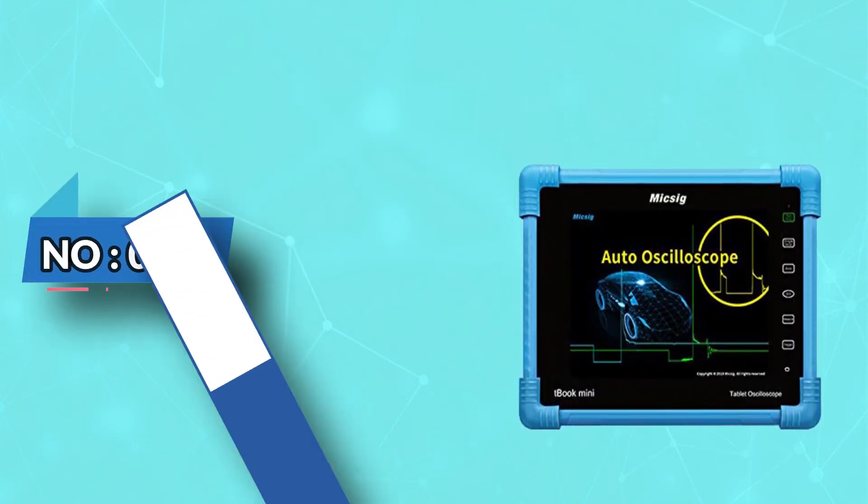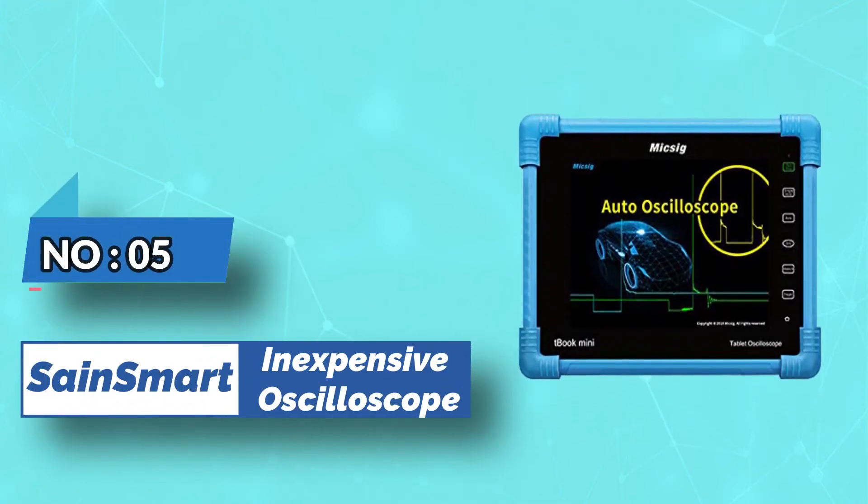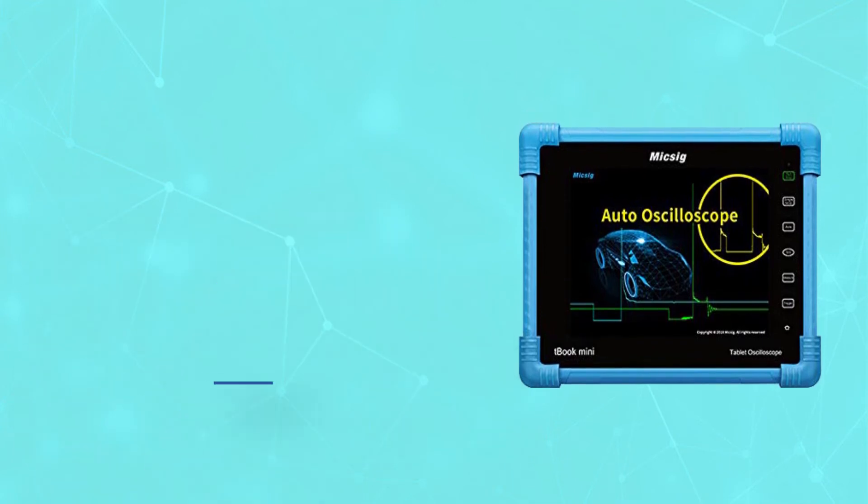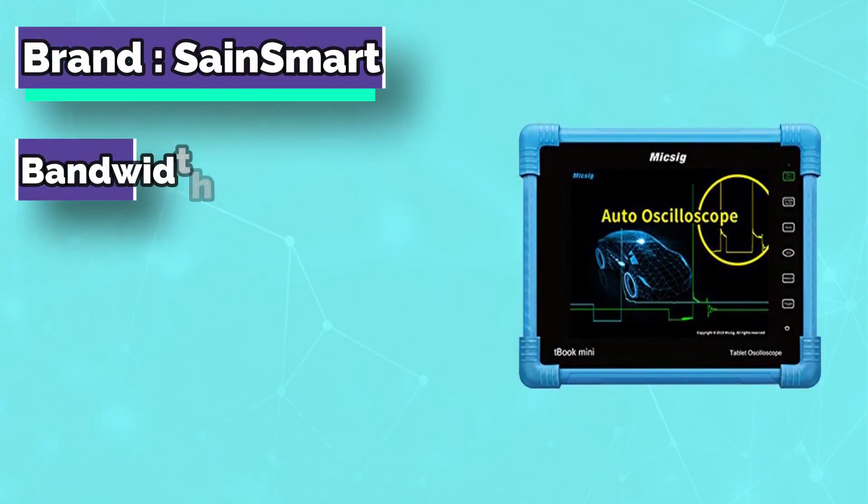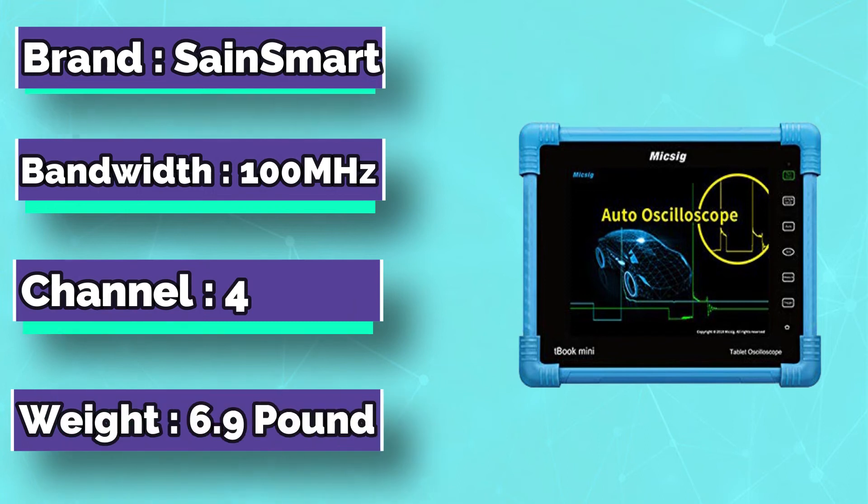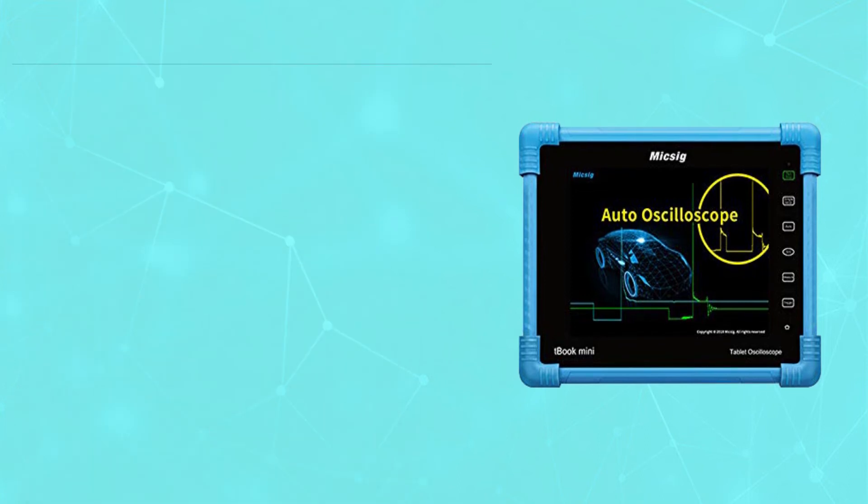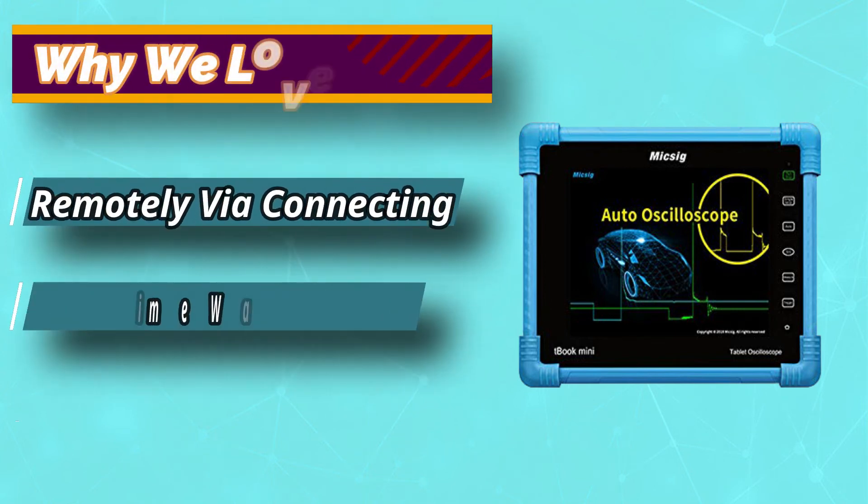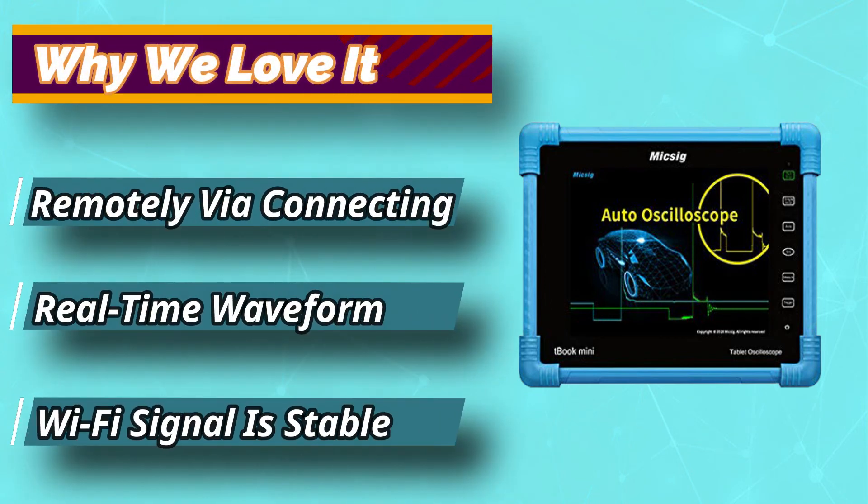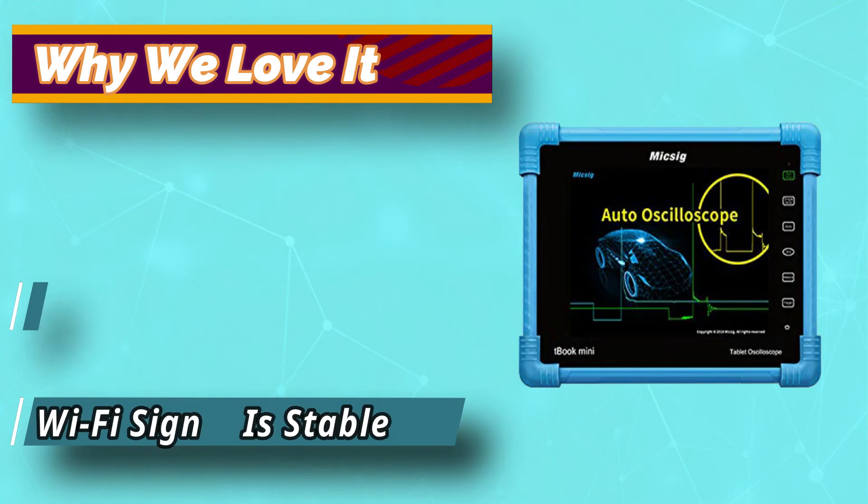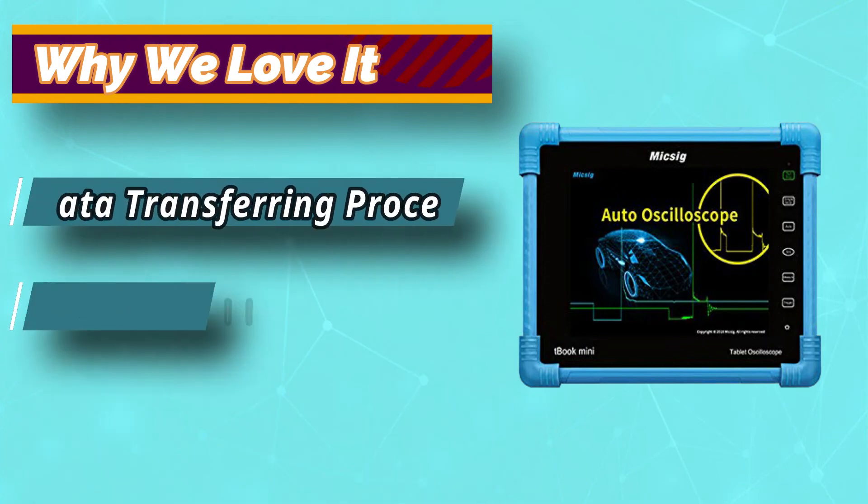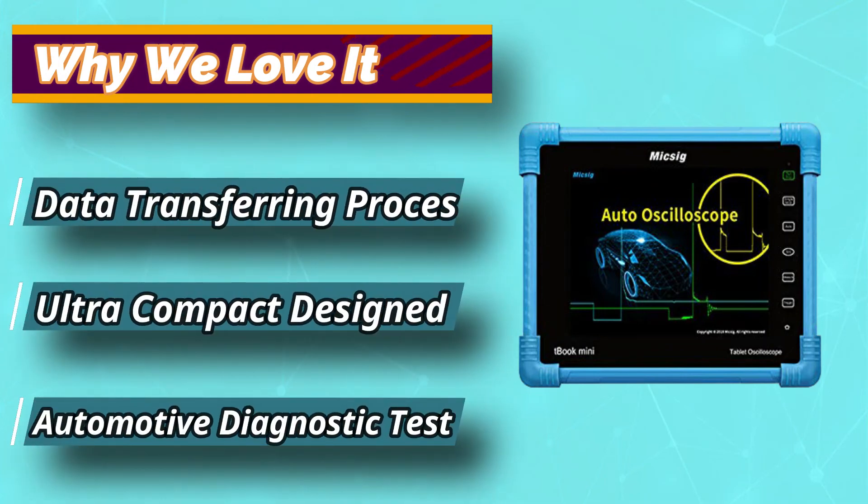Number 5: SainSmart Inexpensive Oscilloscope. The Mikesig Auto 1104 Automotive Oscilloscope is a digital oscilloscope with an 8-inch LCD display and a touch screen, as well as integrated software for car diagnostics. The oscilloscope has integrated automotive diagnostic software, providing it with a wide range of diagnostic tests relevant to the automotive sector.